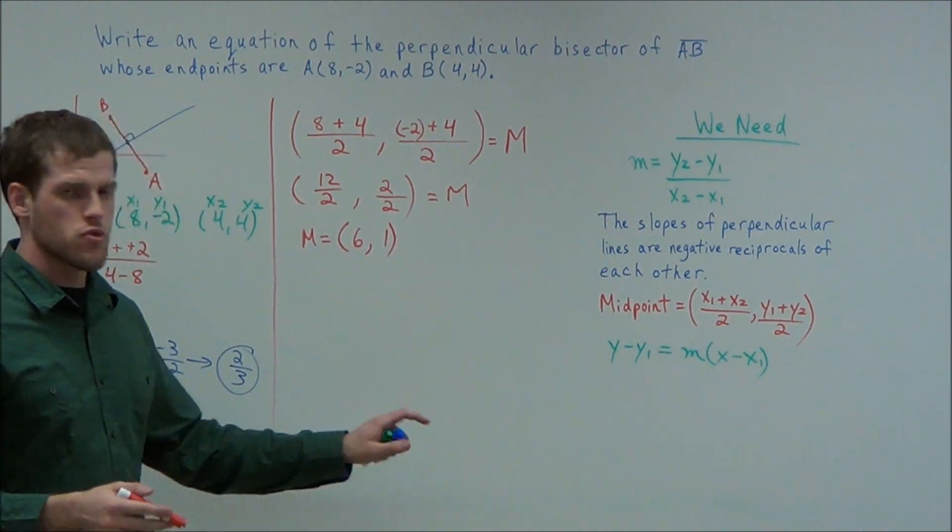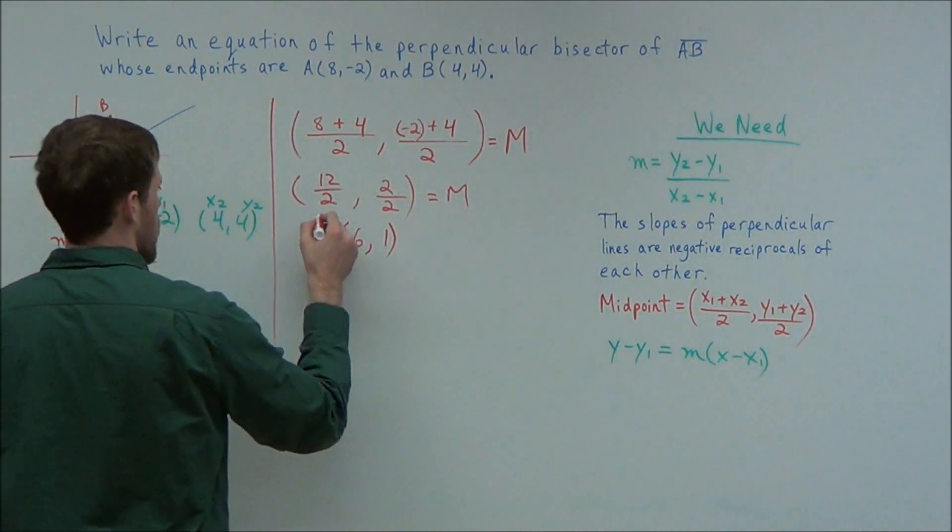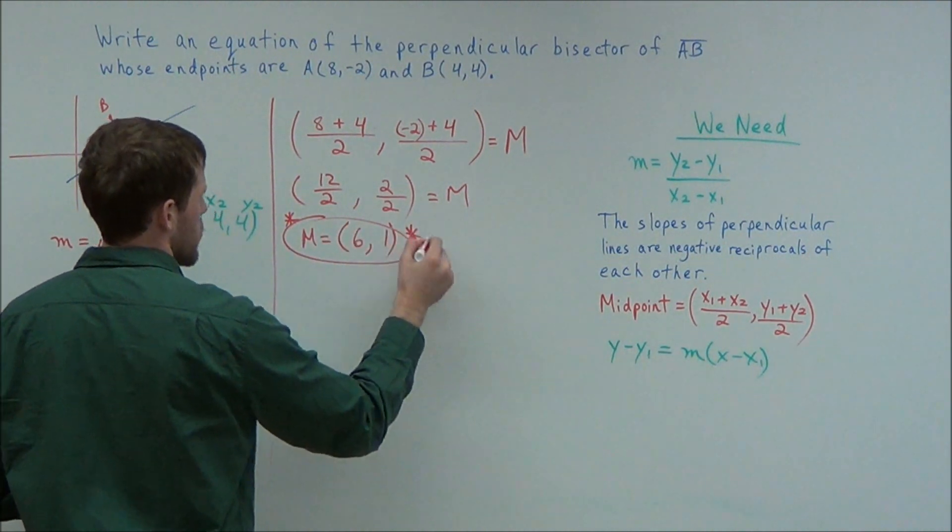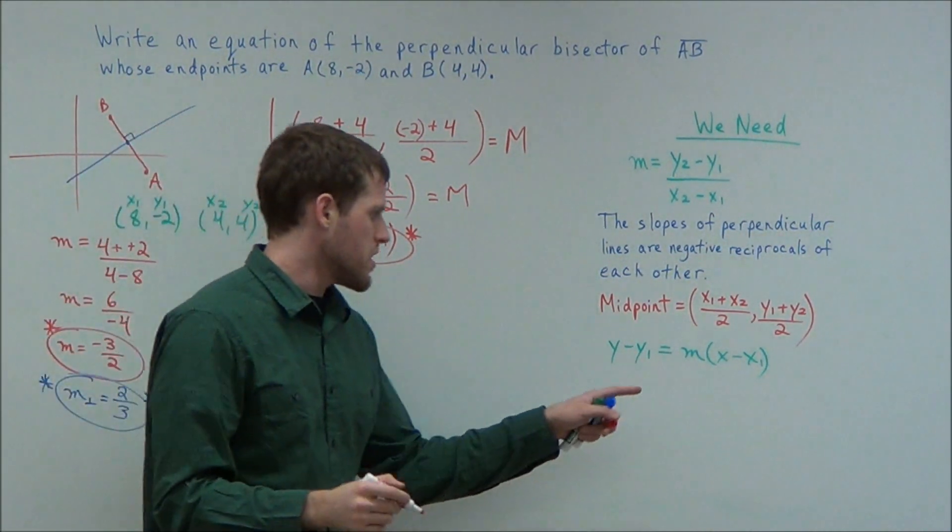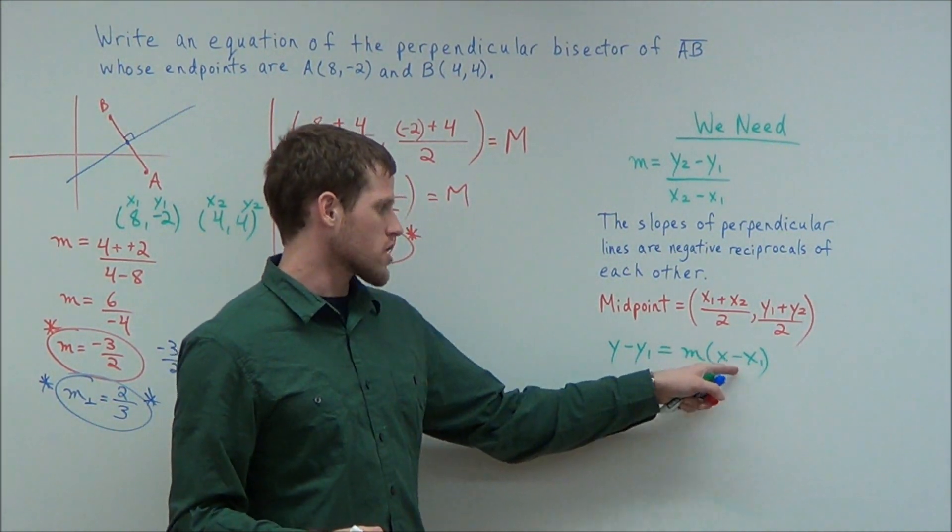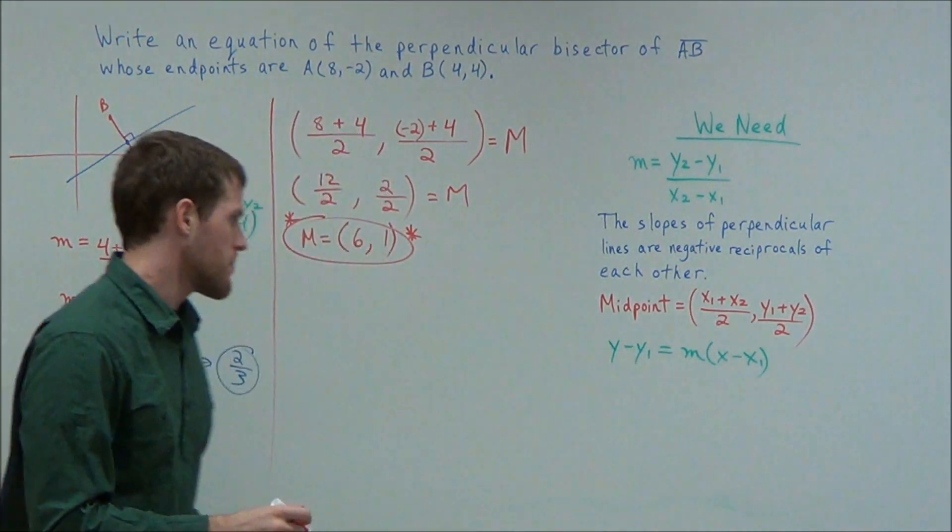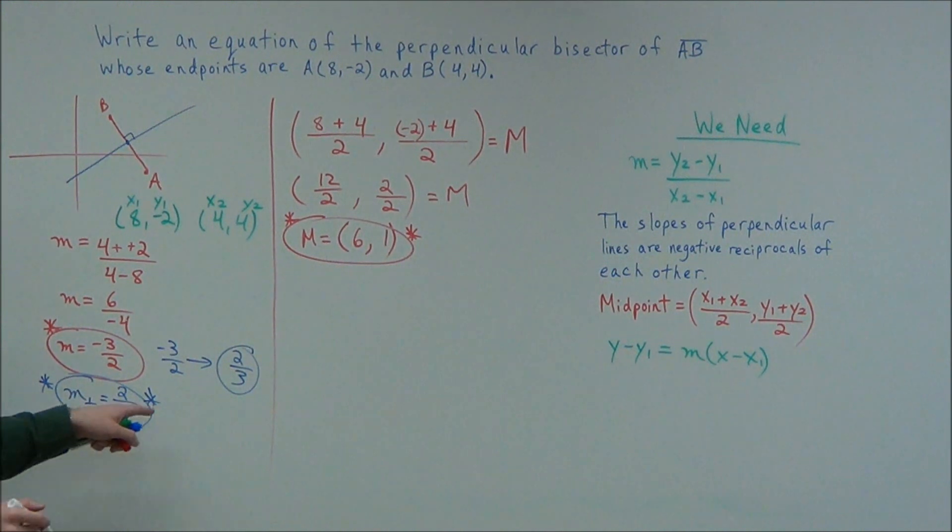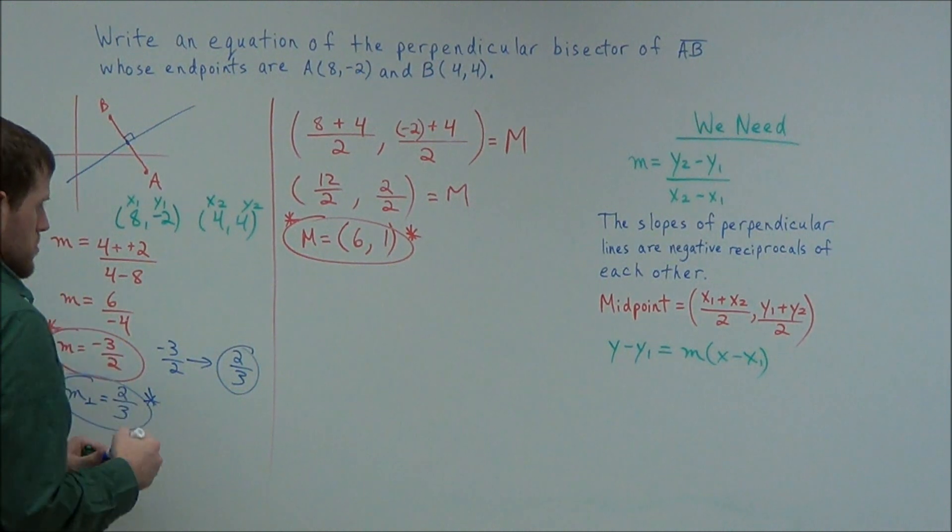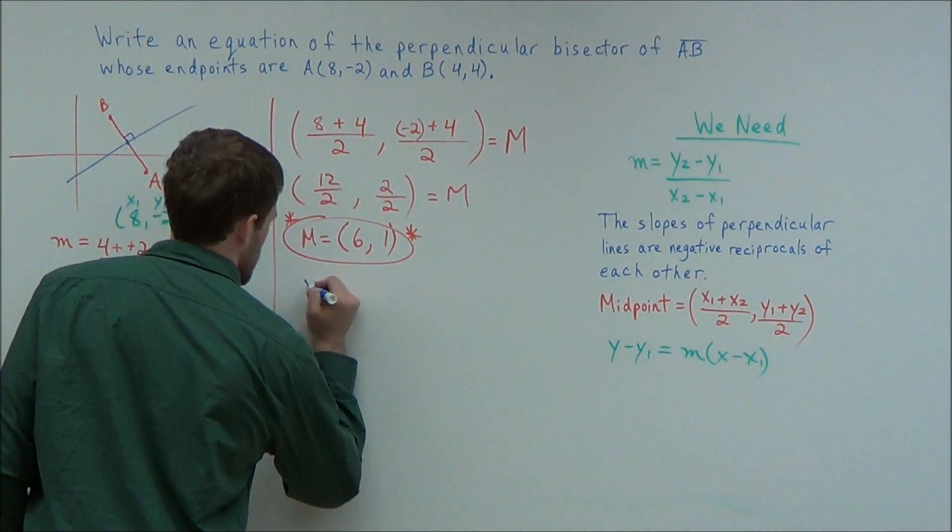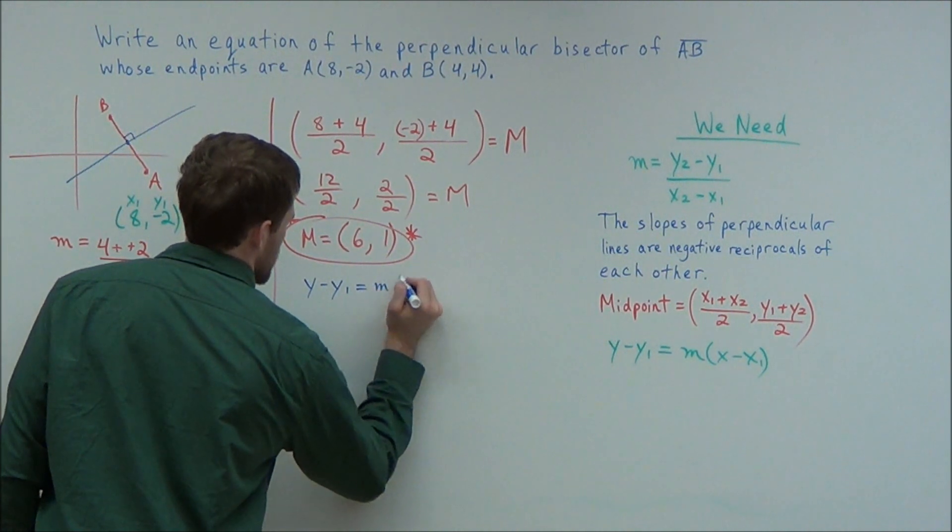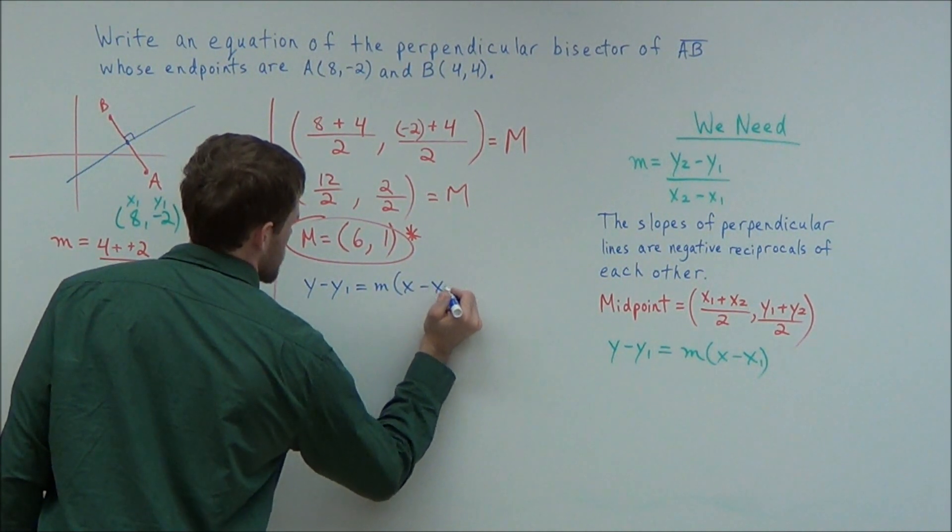So now from this step here, we have our two pieces of information to write the equation of a line. Remember, our goal, or what we need, in order to write the equation of a line, we need a slope, and we need a point to plug in. We need an x1, y1, and we need an M value. So we have our slope, and our point, and now all we need to do is plug this in.